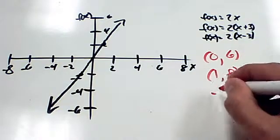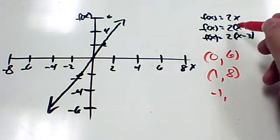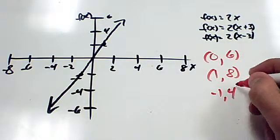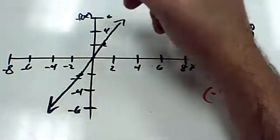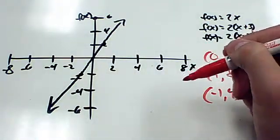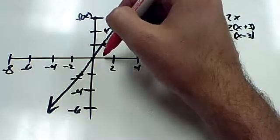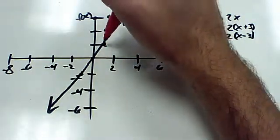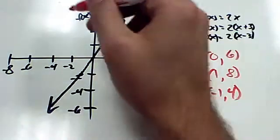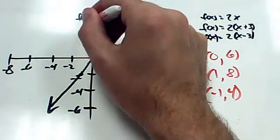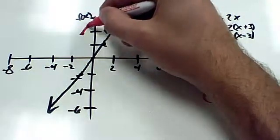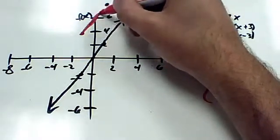And let's do negative 1. When x is negative 1, then we'd have negative 1 plus 3 is 2 times 2 is 4. And so we should get these three points. So 0, 6, which is up here. Let's see, 1, 8, which is going to be, here's 1, and then 8 is probably going to be about right there. And then negative 1, 4, about right there. And so we should end up getting this line right here.